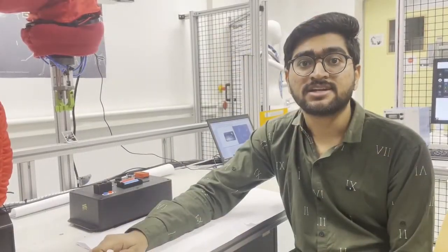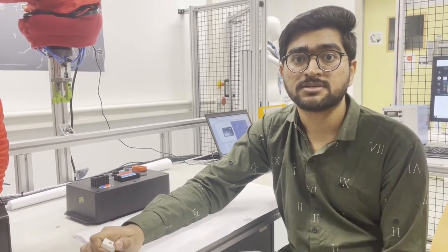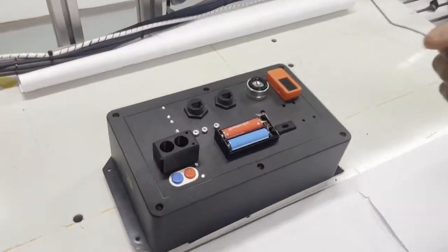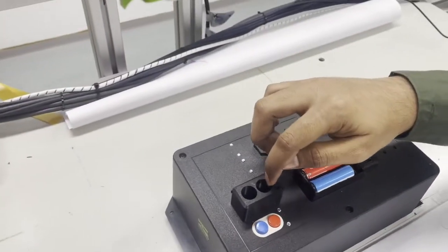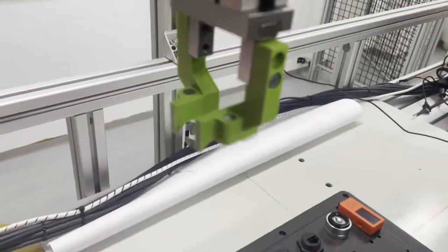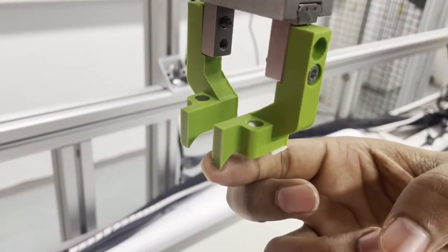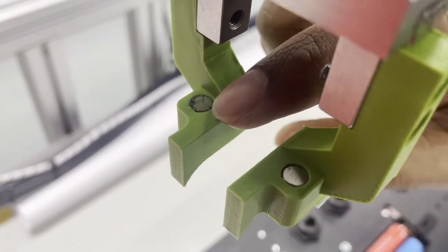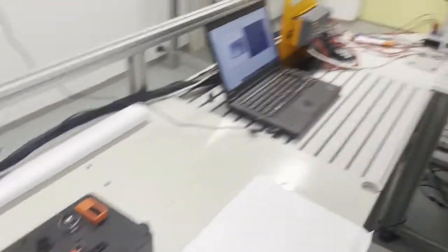As already discussed, we are using a 5 degree of freedom robot for this competition, so we have some limitations, especially for removing the battery from the battery case and sorting them out. We have designed a 3D printed gripper which has edges that can help us remove the battery, and a magnet which can carry the battery and sort them out. I would like to show you this in my demo.